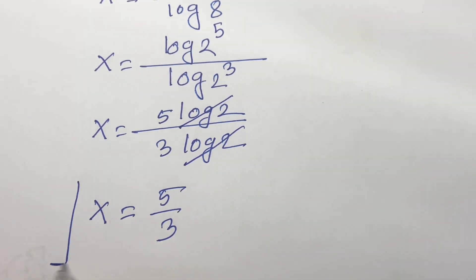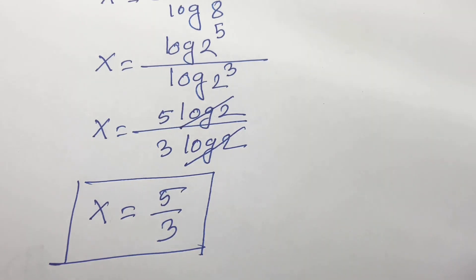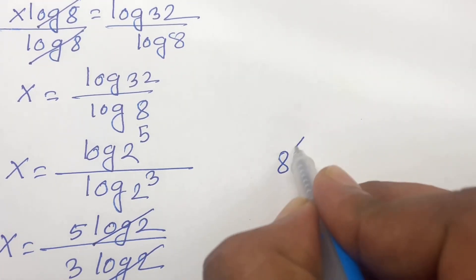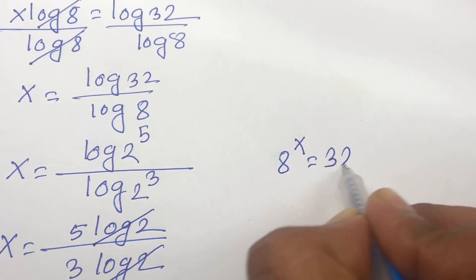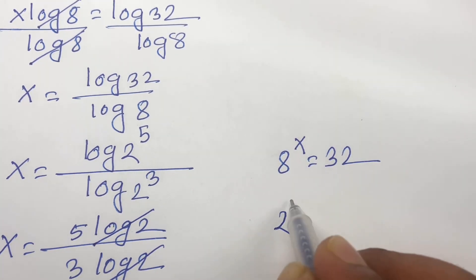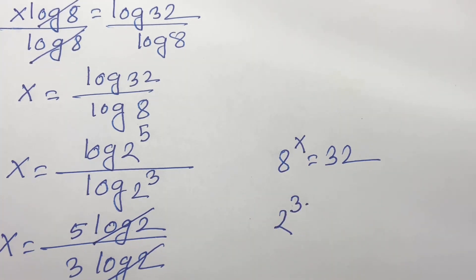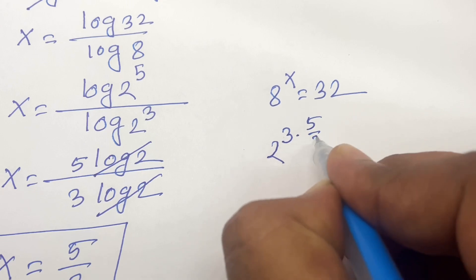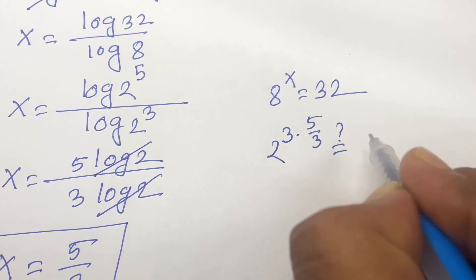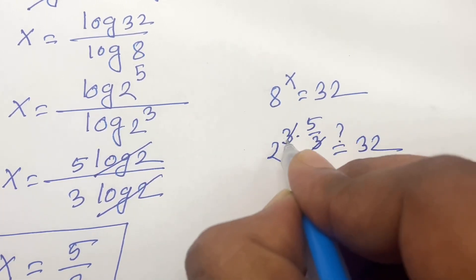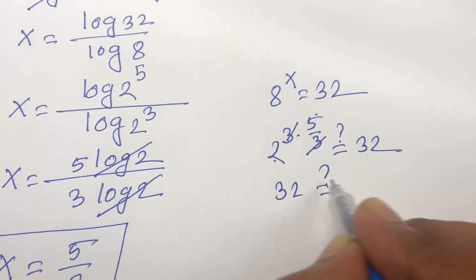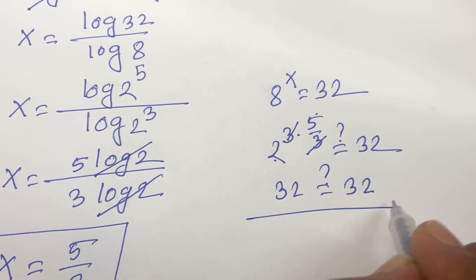This is our final answer. Let's check. Our equation is 8 power x is equal to 32. 8 like as 2 to the power 3 times x is 5 over 3. So I can say here is 5 over 3 is equal to 32. 3 and 3 cancel, so 2 to the power 5 is equal to 32, which equals 32. So this is proved.